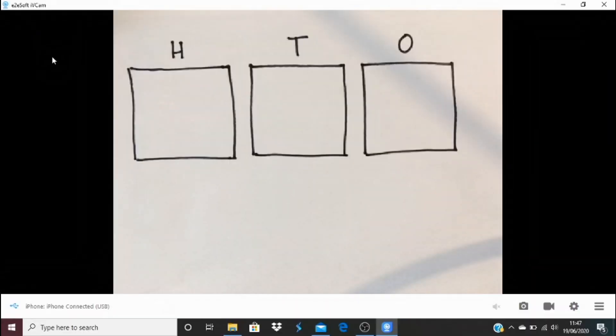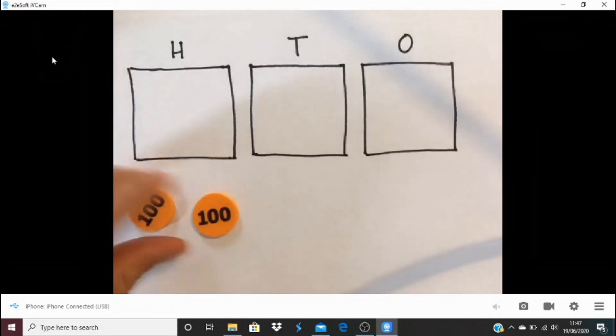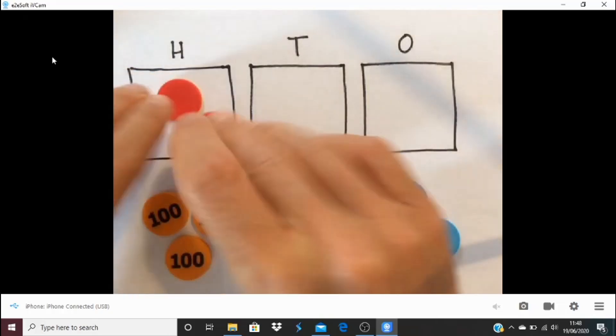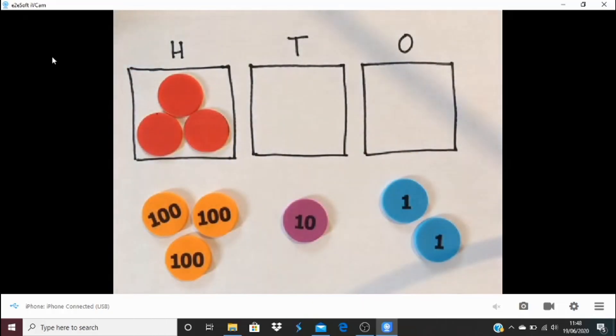So you're most likely to see numbers being built in this way. So let's say here, I could say I have 312. And in 312, what do I have? I've got three hundreds, I've got one ten, and I've got two ones. Now, I could represent that number.